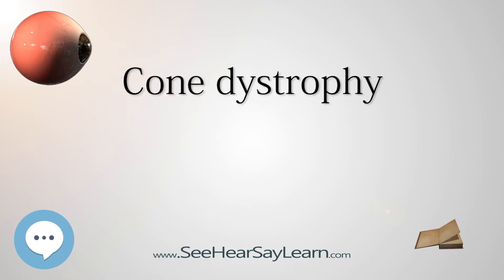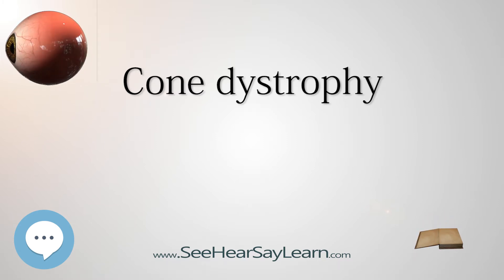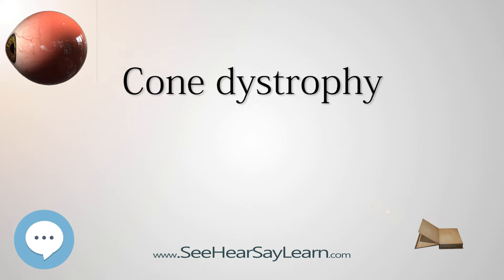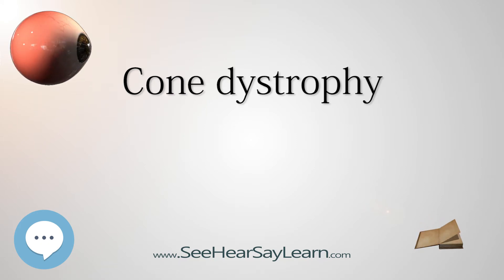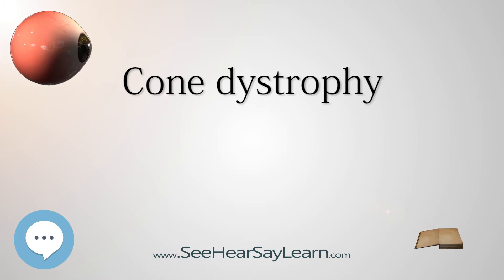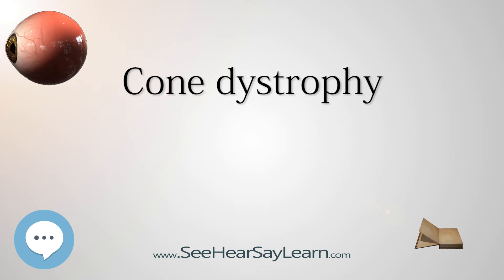The fundus exam via ophthalmoscopy is essentially normal early on in cone dystrophy, and definite macular changes usually occur well after visual loss. Fluorescent angiography, FA, is a useful adjunct in the workup of someone suspected to have cone dystrophy, as it may detect early changes in the retina that are too subtle to be seen by ophthalmoscope.